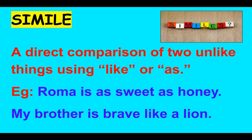For example: Roma is as sweet as honey. My brother is brave like a lion. Here, Roma is compared to honey and there is usage of the word 'as.' And in the second example, brother is compared to a lion and there is usage of the word 'like.' Hence, it is an example of simile.